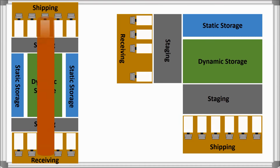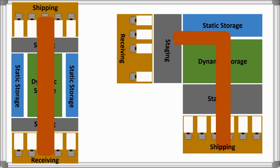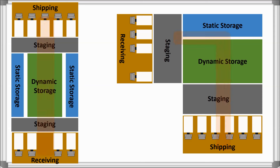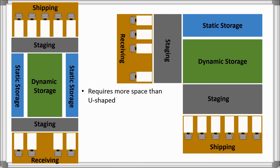I-shaped and L-shaped warehouse product flow, also known as through flow, are similar in that the shipping and receiving areas are located on different sides of the warehouse. As a result, these require more available space than U-shaped layouts, though they can be beneficial for certain operations.